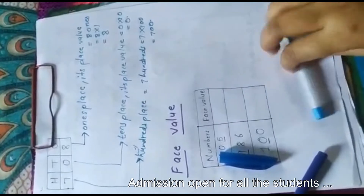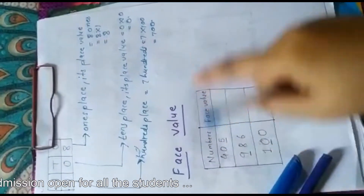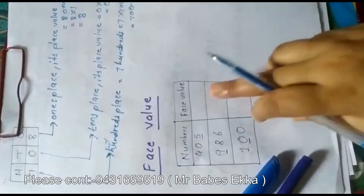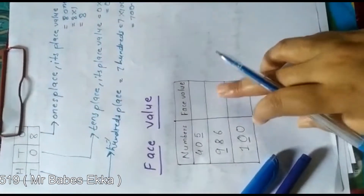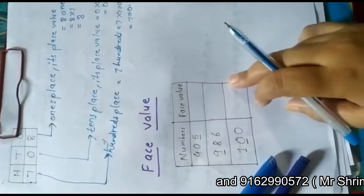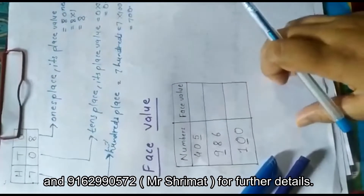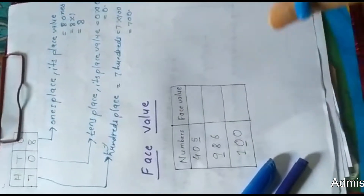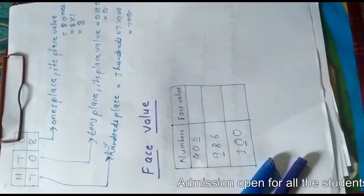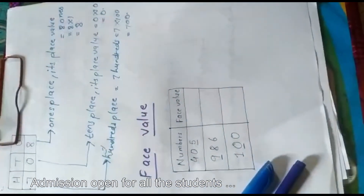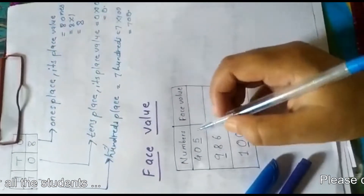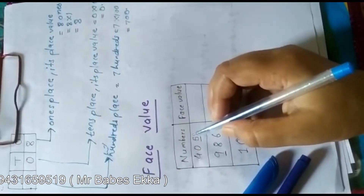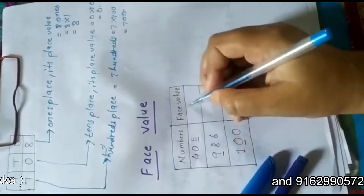Now we will look at our second topic, that is face value. So what do you mean by face value? In face value, the actual value of a digit — the face value of a digit remains unchanged. We only change the place value according to its position. In face value, you can see the underlined number's face value is written. So 5 is at ones place, and the face value of 5 is 5.